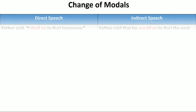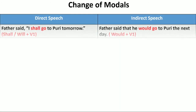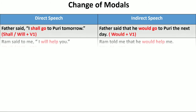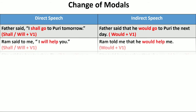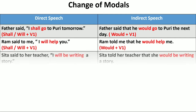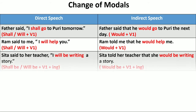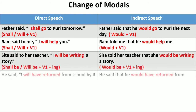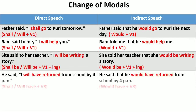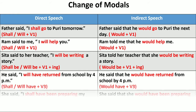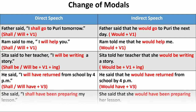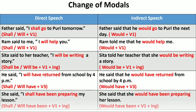Change of modals. 'Father said I shall go to Puri tomorrow' becomes 'Father said that he would go to Puri the next day.' Shall/will is changed to would. 'She said to her teacher I will be writing a story' becomes 'She told her teacher that she would be writing a story.' Will be + V-ing is changed to would be + V-ing. 'He said I will have returned from school by 4 pm' becomes 'He said that he would have returned from school by 4 pm.' Will have + V3 is changed to would have + V3. 'She said I shall have been preparing my lesson' becomes 'She said that she would have been preparing her lesson.' Will have been + V-ing is changed to would have been + V-ing.